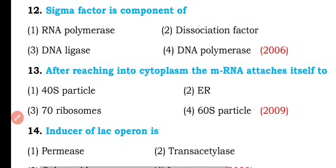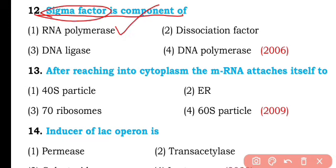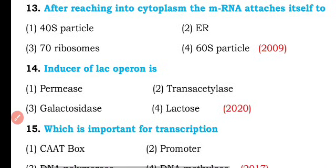Question number twelve. Sigma factor is a component of: RNA polymerase, dissociation factor, DNA ligase, or DNA polymerase? So the correct answer is option one. Sigma factor is a protein required for the initiation of transcription in prokaryotes and is an important component of RNA polymerase.